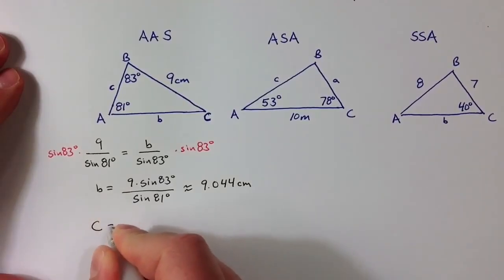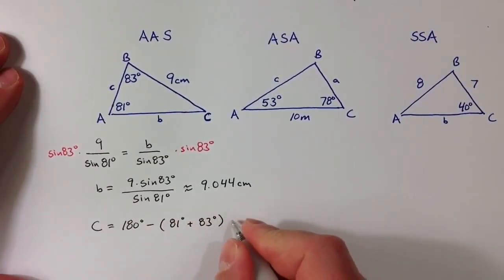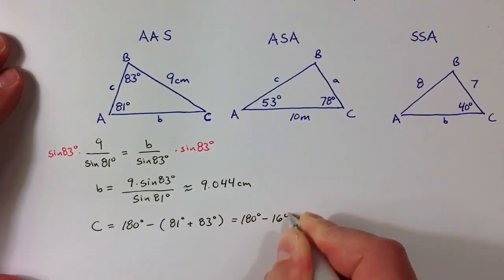So c has to be what's left over. If I take 180 degrees and subtract the measure of the other two angles, that will give me the measure for angle c. So I end up with 180 degrees minus 164 degrees, which means that angle c has to equal 16 degrees.